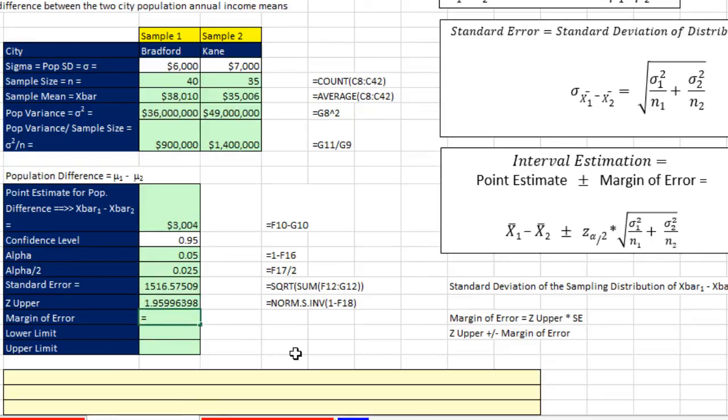Now the margin of error, remember z is number of standard deviations. That's it. 1.95 times our standard error, our standard deviation for the sampling distribution of x-bars, and enter. So there's our margin of error.